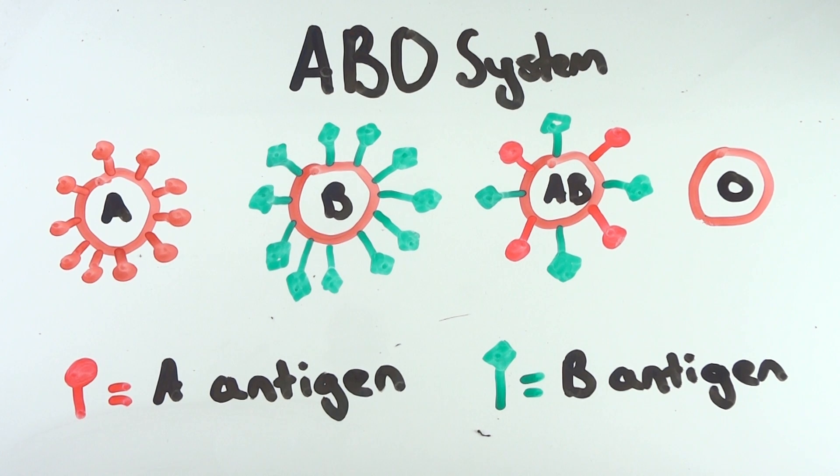Your immune system attacks red blood cells which have the wrong antigen, which is why knowing your blood type is very important for blood transfusions.